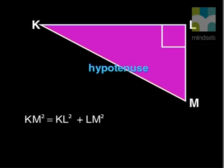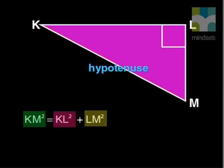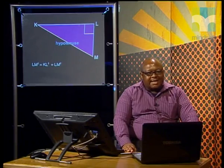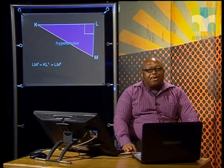So, if KLM is a right-angled triangle, the theorem proves that KM squared is equal to KL squared plus LM squared. This theorem has fascinated mathematicians for centuries, and it has been proved in several different ways. We are going to prove it using the proportion theorem and similarity.